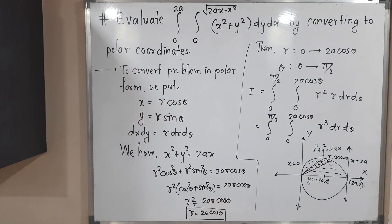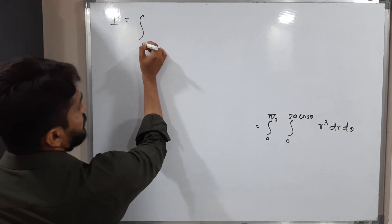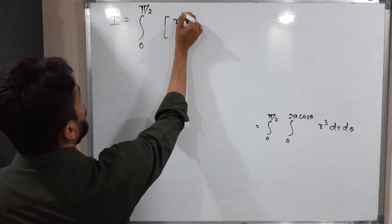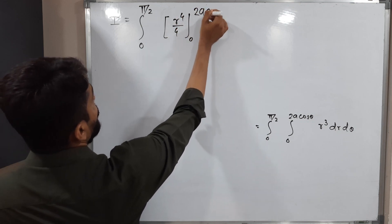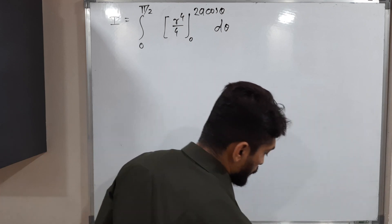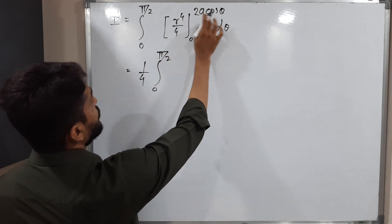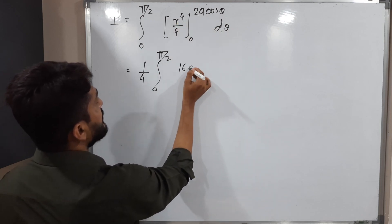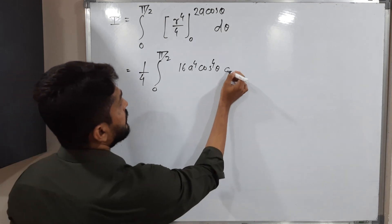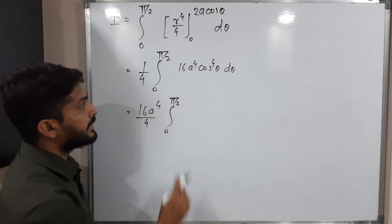Integrating r³ with respect to r gives r⁴/4, evaluated from 0 to 2a cosθ. Applying the limits: (2a cosθ)⁴/4 = 16a⁴ cos⁴θ / 4. The value at 0 is 0. So the integral becomes (1/4) ∫₀^{π/2} 16a⁴ cos⁴θ dθ, which simplifies to 4a⁴ ∫₀^{π/2} cos⁴θ dθ.